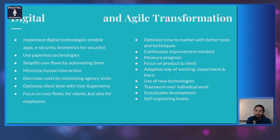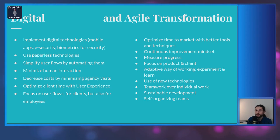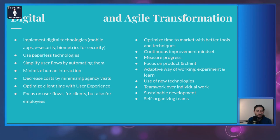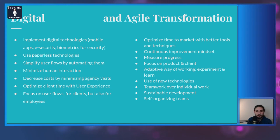Now let's talk about what agile transformation is — the other side of digital transformation. Here we want to optimize time to market with better tools and techniques — modern tools like continuous deployment, continuous integration, DevOps, and automated testing — so that by themselves they help sustain the digital transformation.